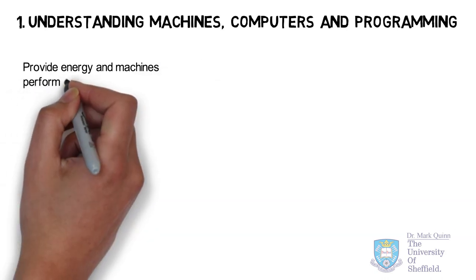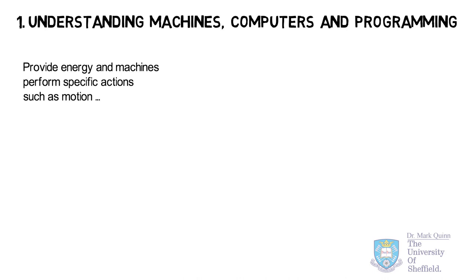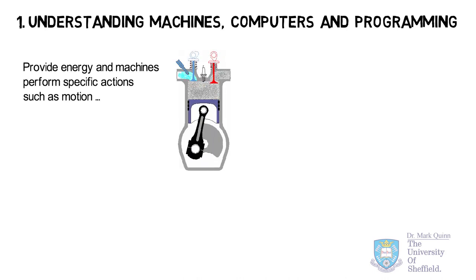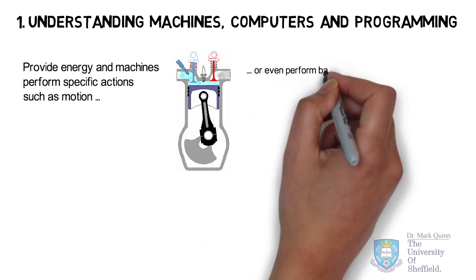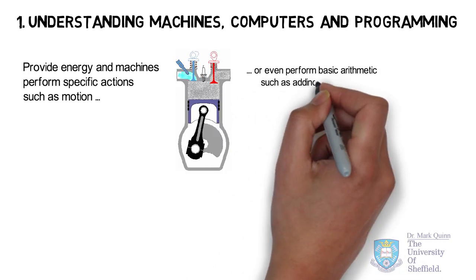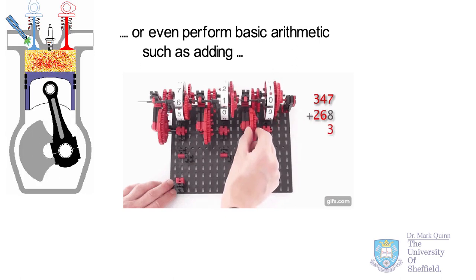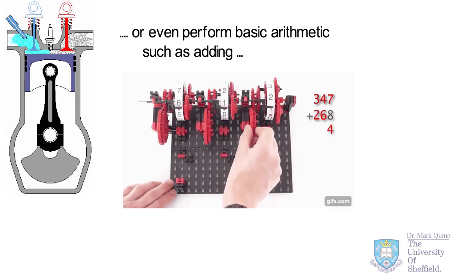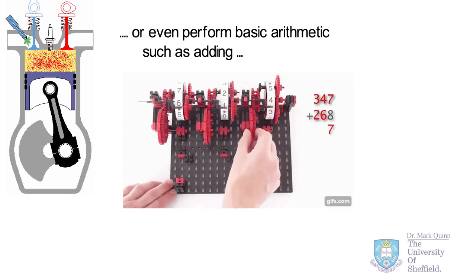Provide energy and depending on the machine's design it will perform some specific action such as motion. For example, a combustion engine will drive motion from the energy of petrol or diesel fuel. Machines can even perform some simple arithmetic such as addition, subtraction, division and multiplication. Here in this example the mechanical energy is provided by the human hand pushing the cog, and the machine is designed to add two numbers together.